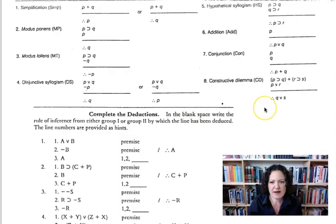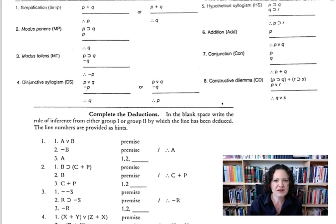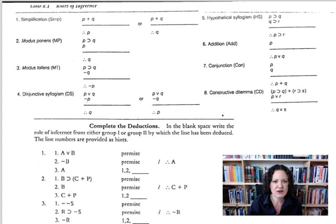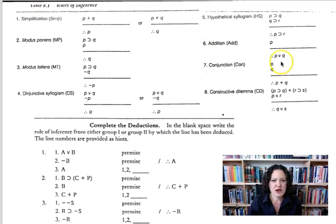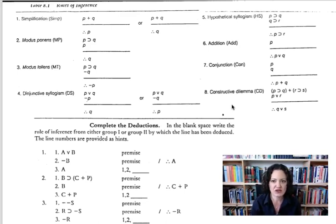Here's the worksheet that I have. The top gives us a list of eight valid argument forms. These are not syllogisms — they don't use A, E, I, and O as the premises and conclusion.